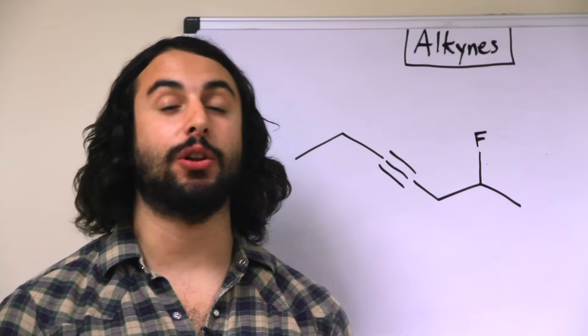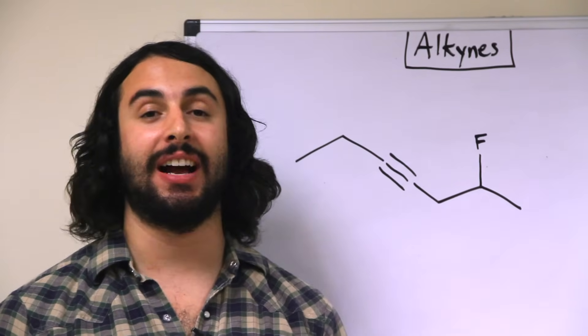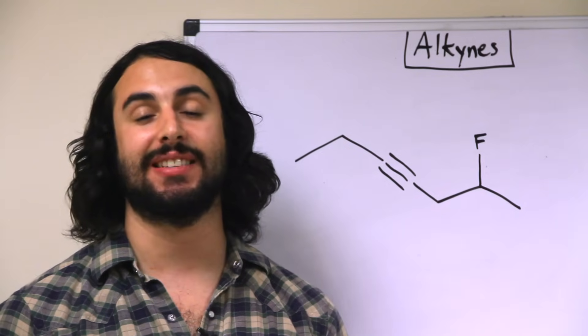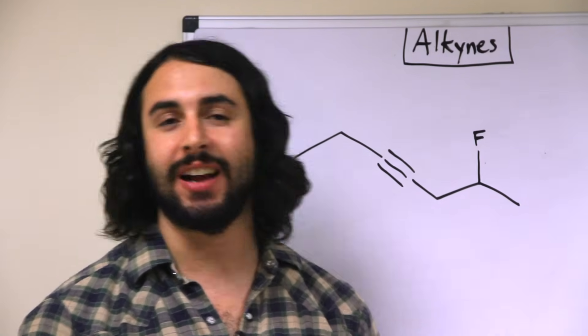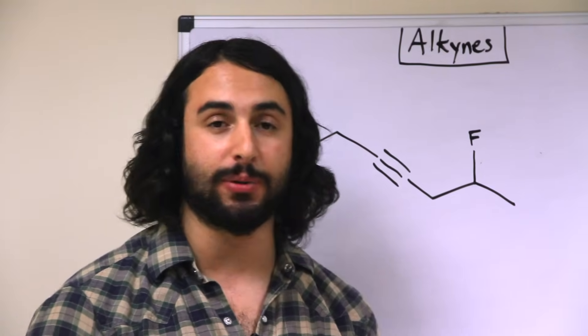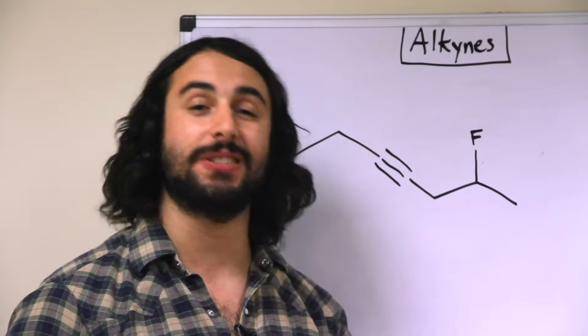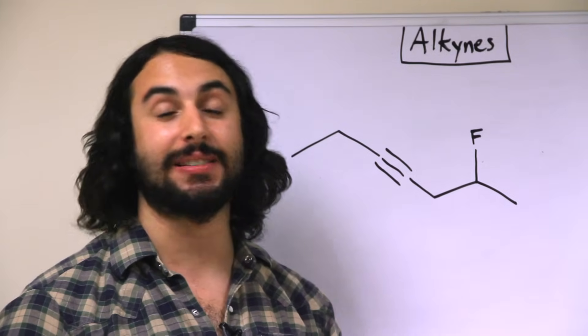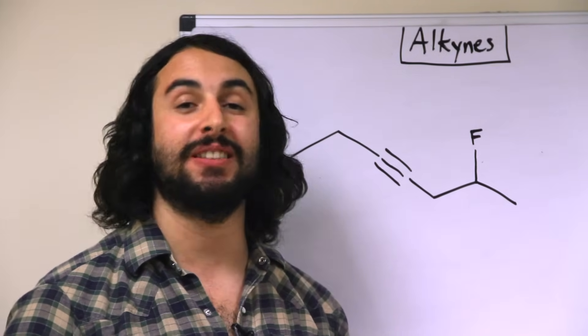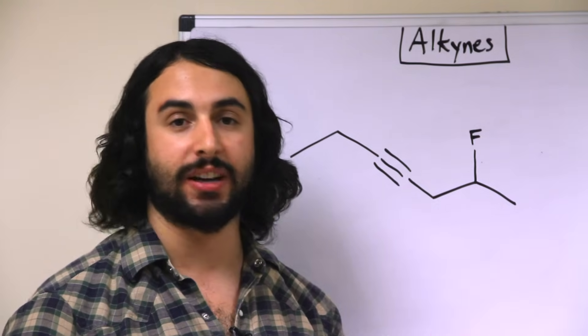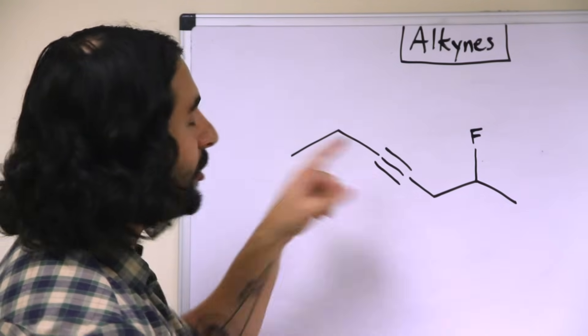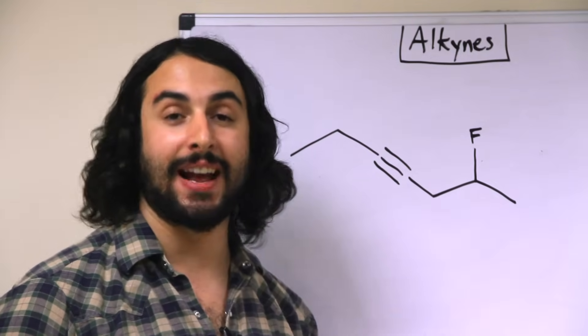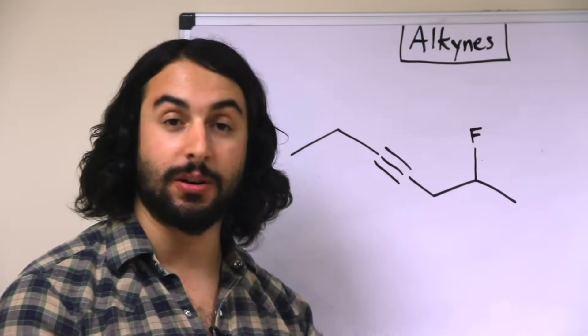So let's take a look at alkynes now. An alkyne is a hydrocarbon that contains at least one triple carbon-carbon bond. Now, alkynes can be a little bit tricky to draw properly because any carbon atom that is participating in a triple bond is necessarily SP hybridized. This means that it exhibits linear molecular geometry, if we remember from Gen Chem, and that means that the two carbons that it is attached to must be 180 degrees apart.